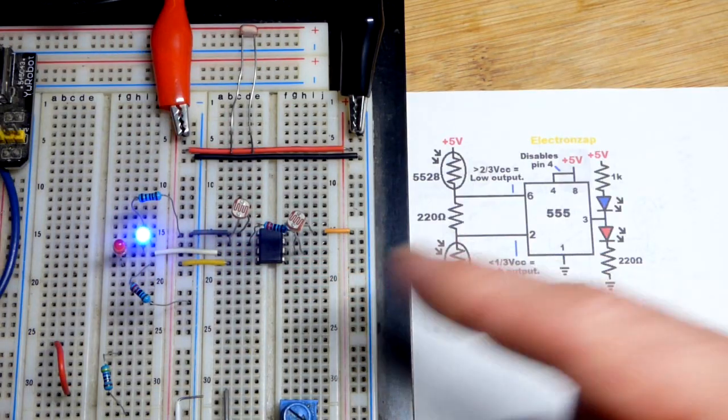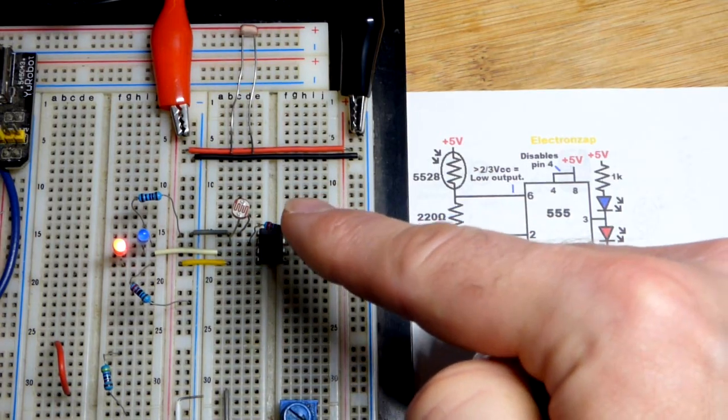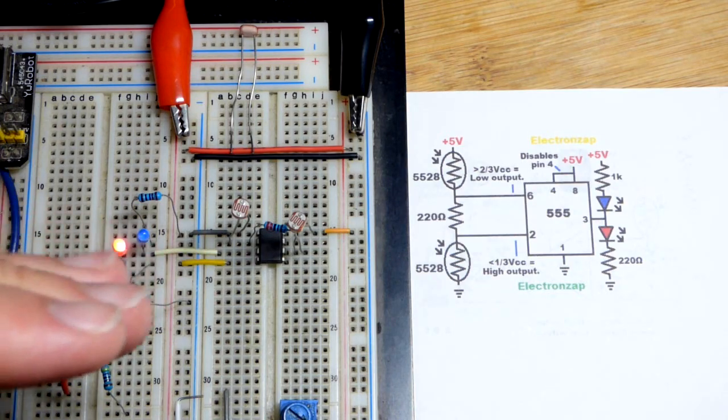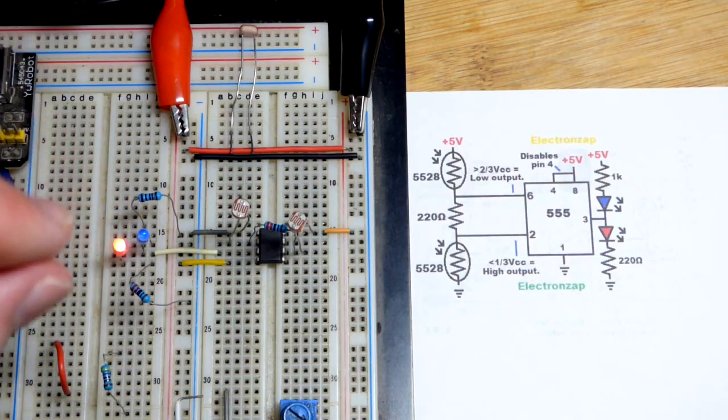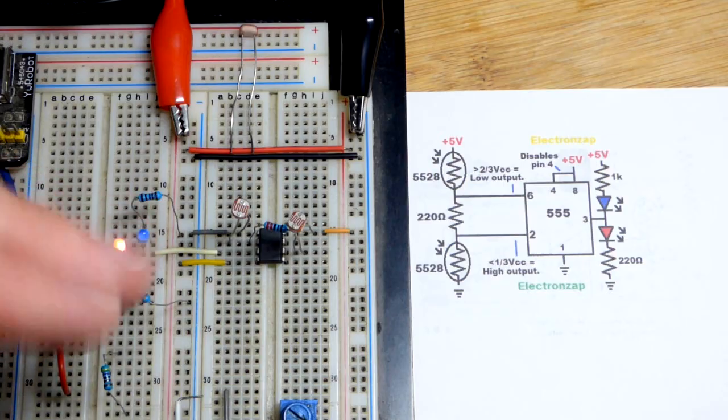Just remember now that's the brighter one even though I'm doing something to that one. And then when I cover this one, that's the brighter one even though I'm doing something to that one. It's whichever one has the brighter light that sets the output.